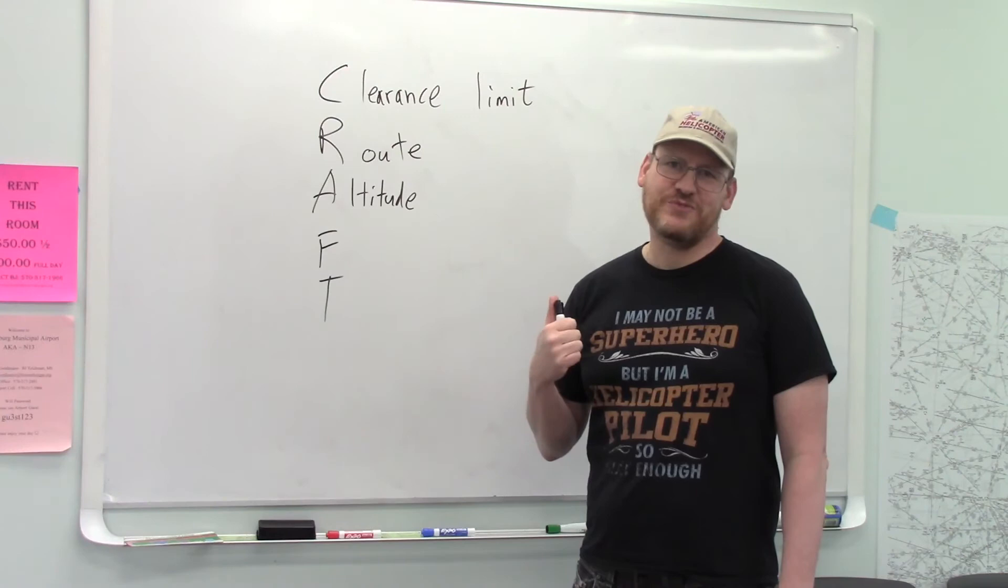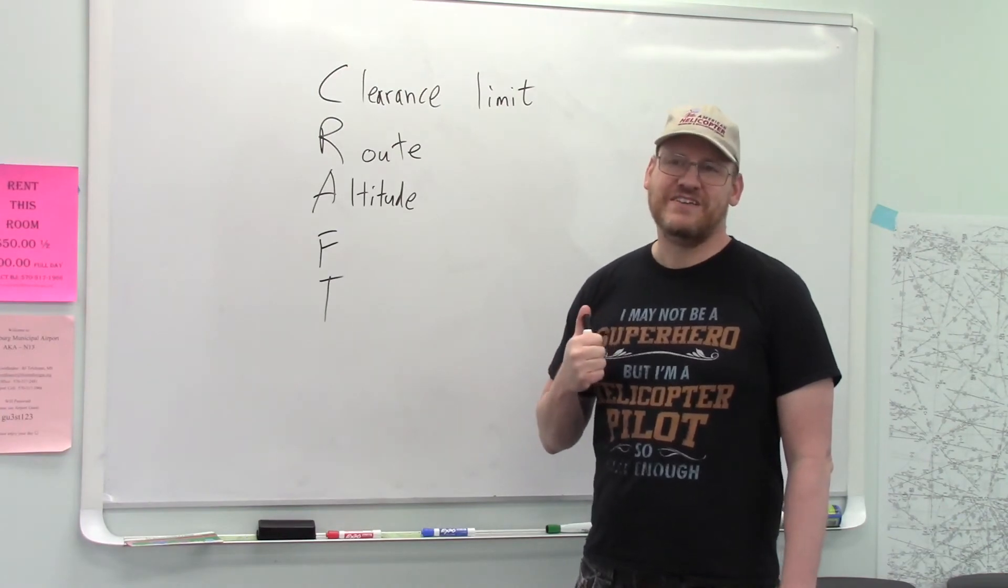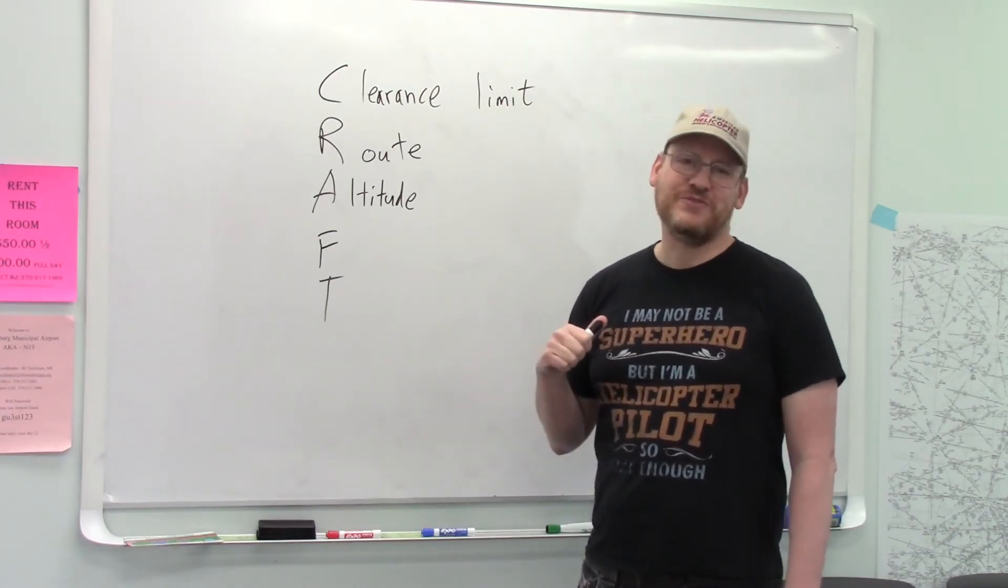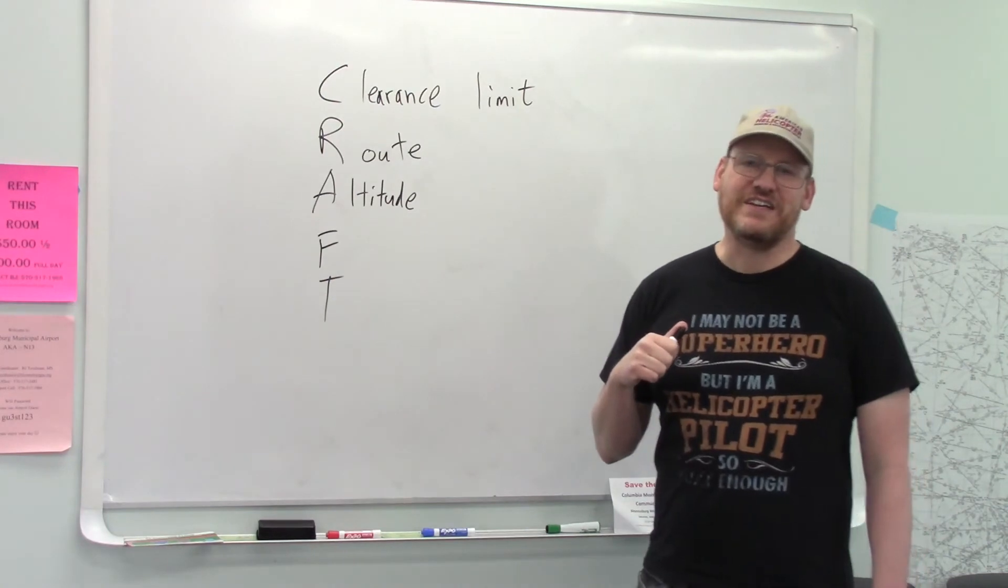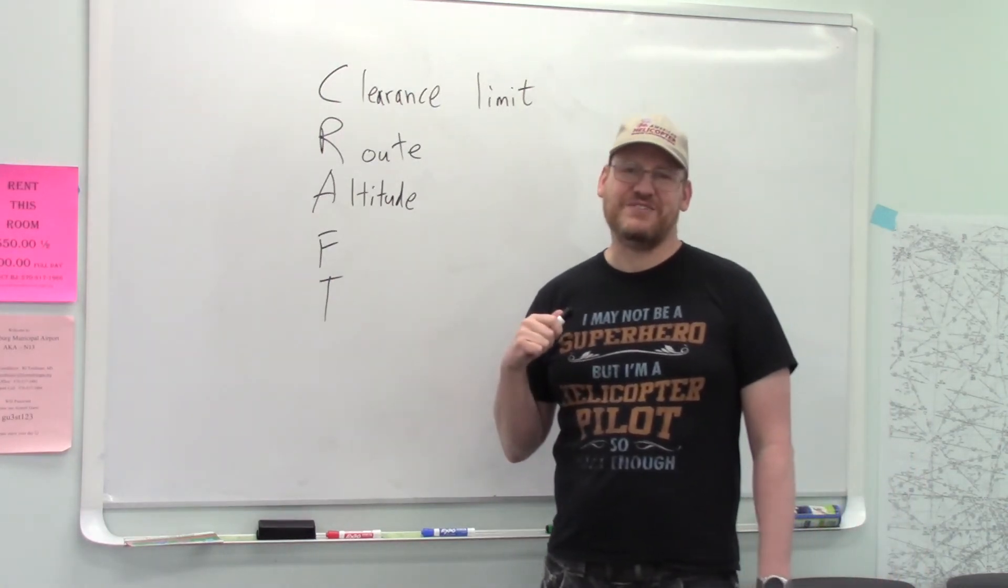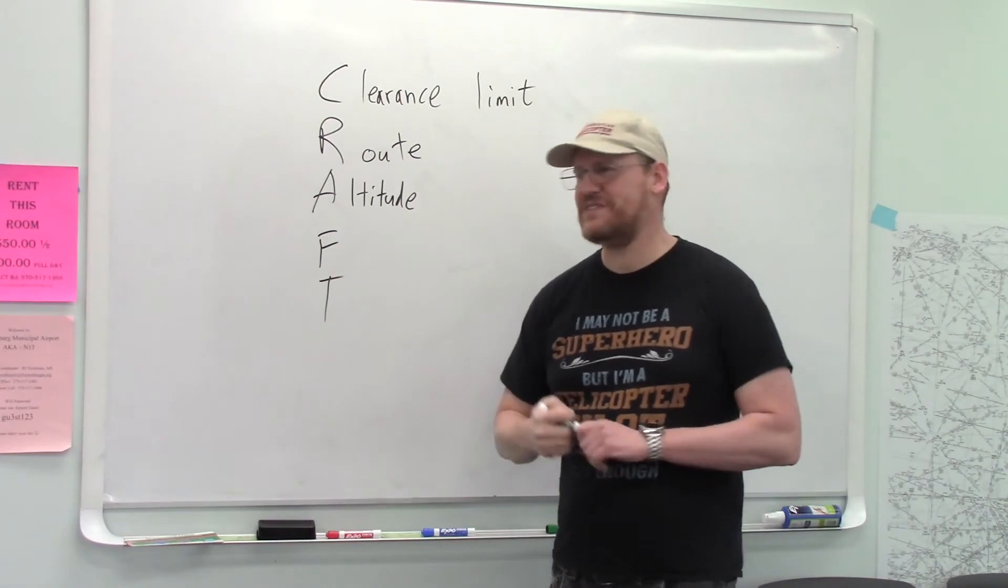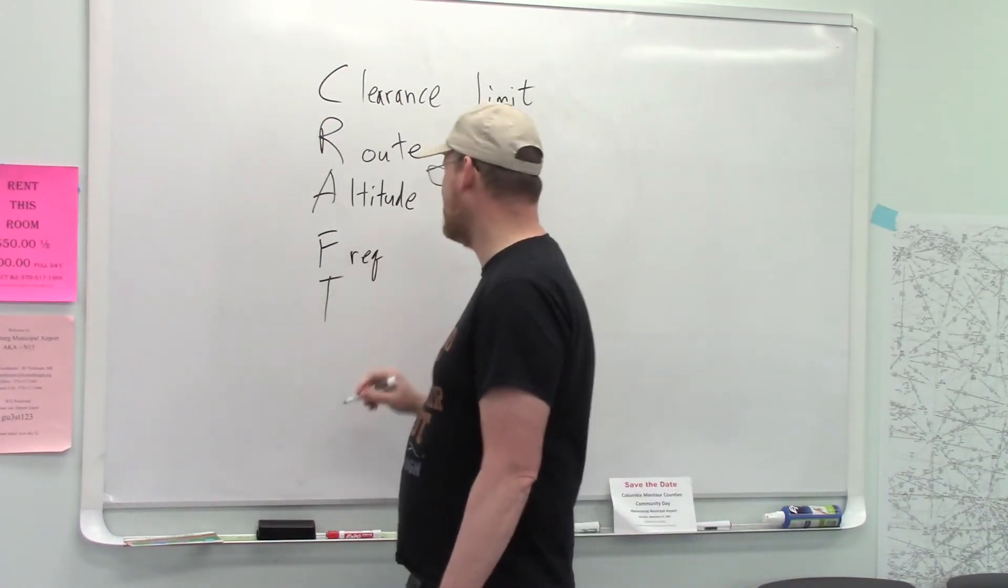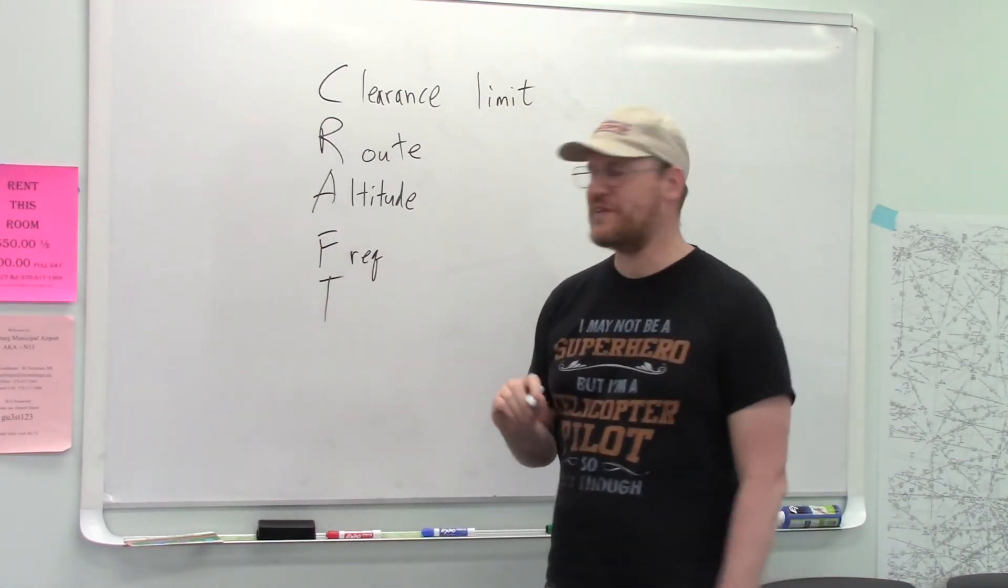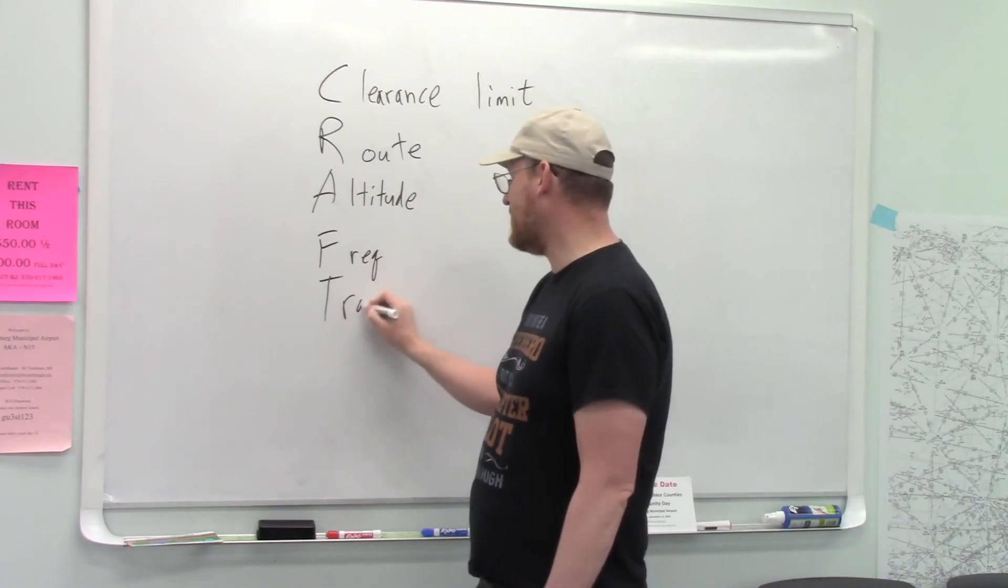They're not going to clear me all the way up to flight level 250 right away. They're going to give me an intermediate altitude. Then they're going to give me a frequency. That's my departure frequency, typically. And then my transponder code.